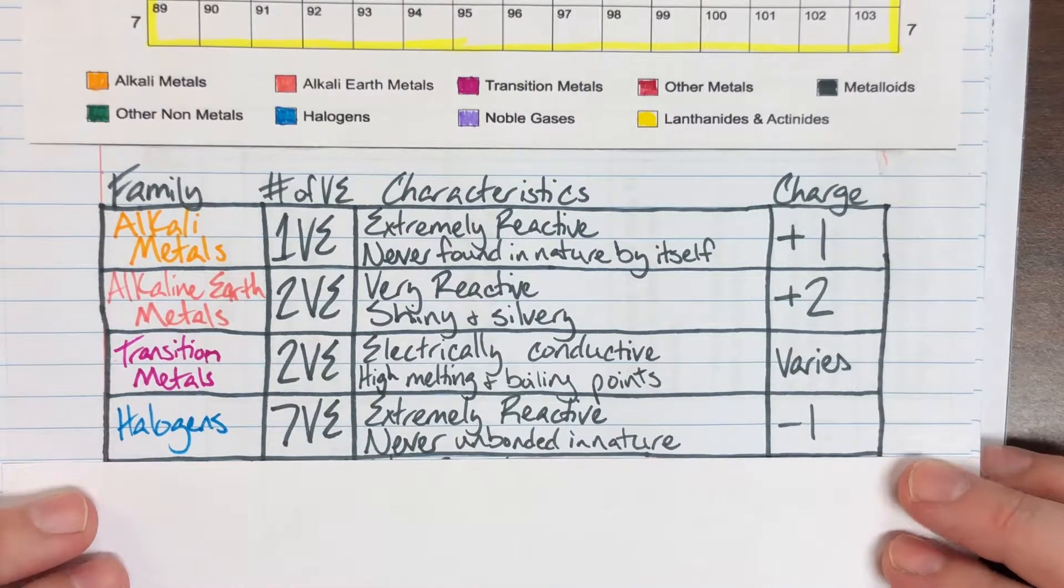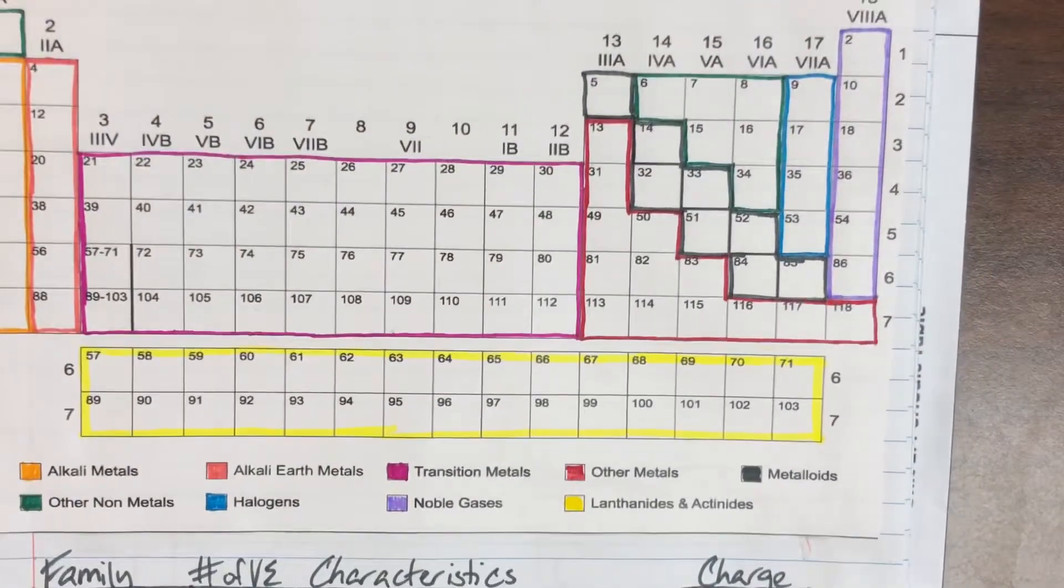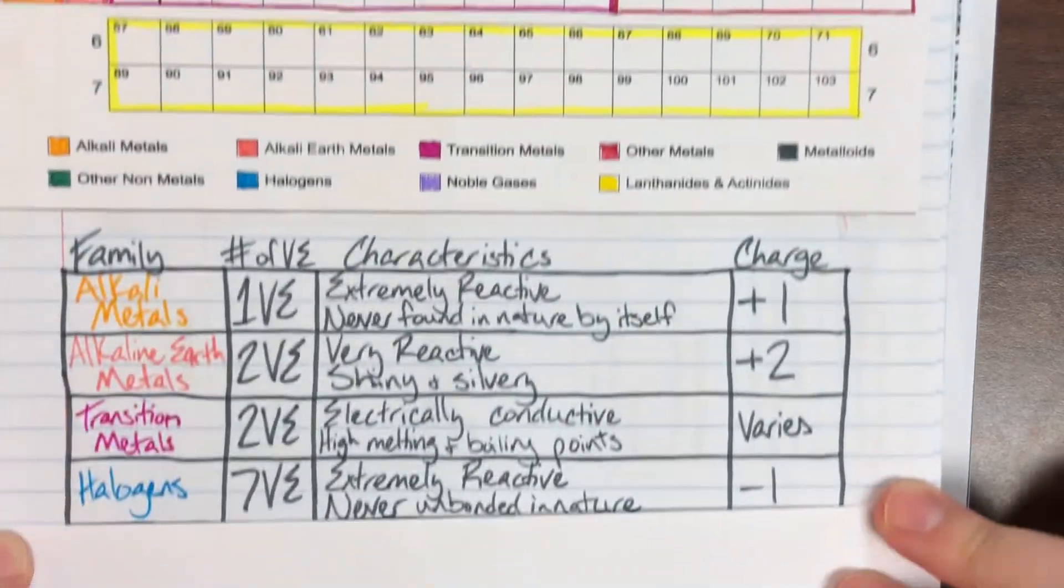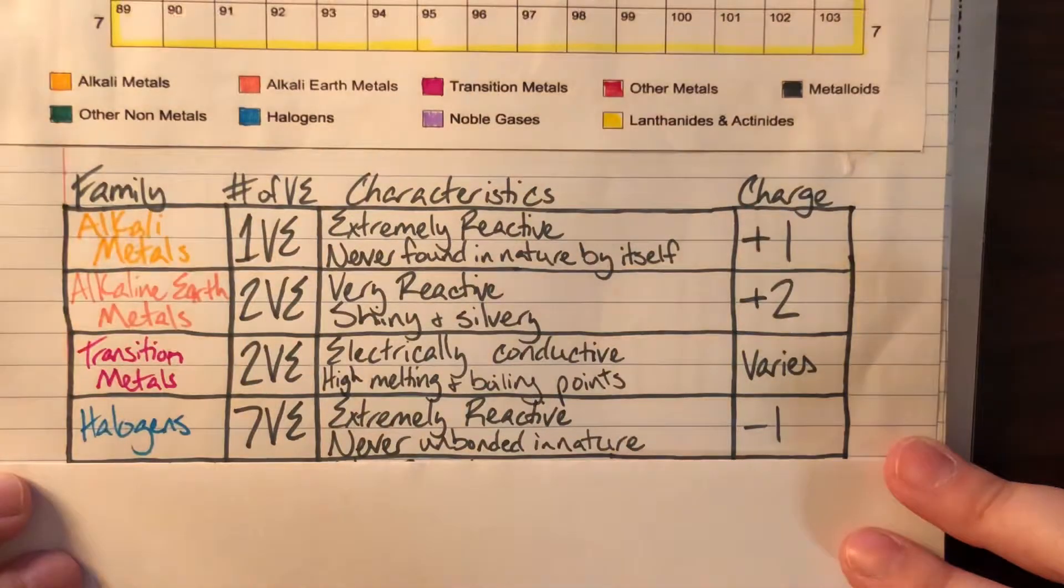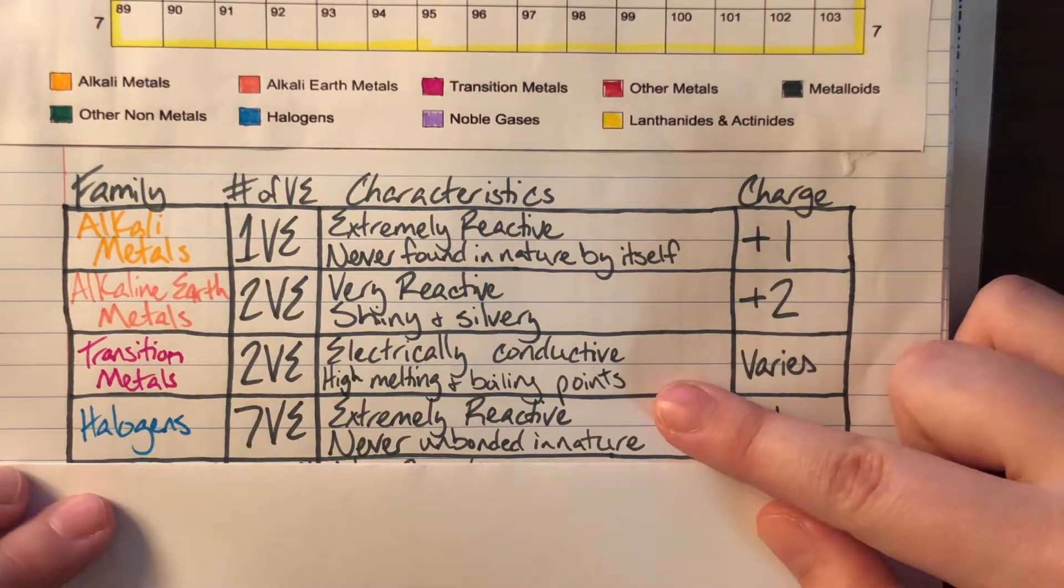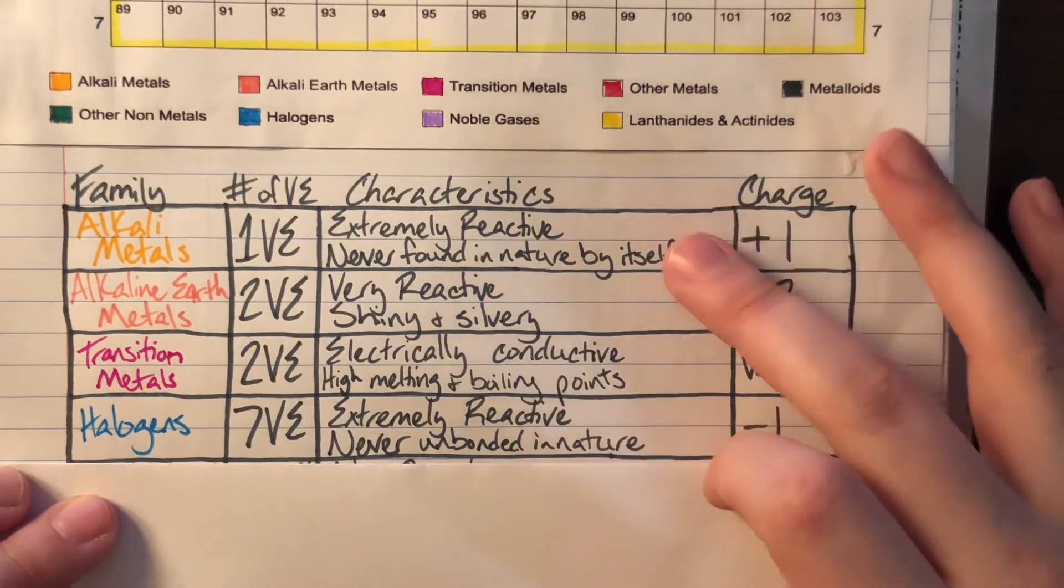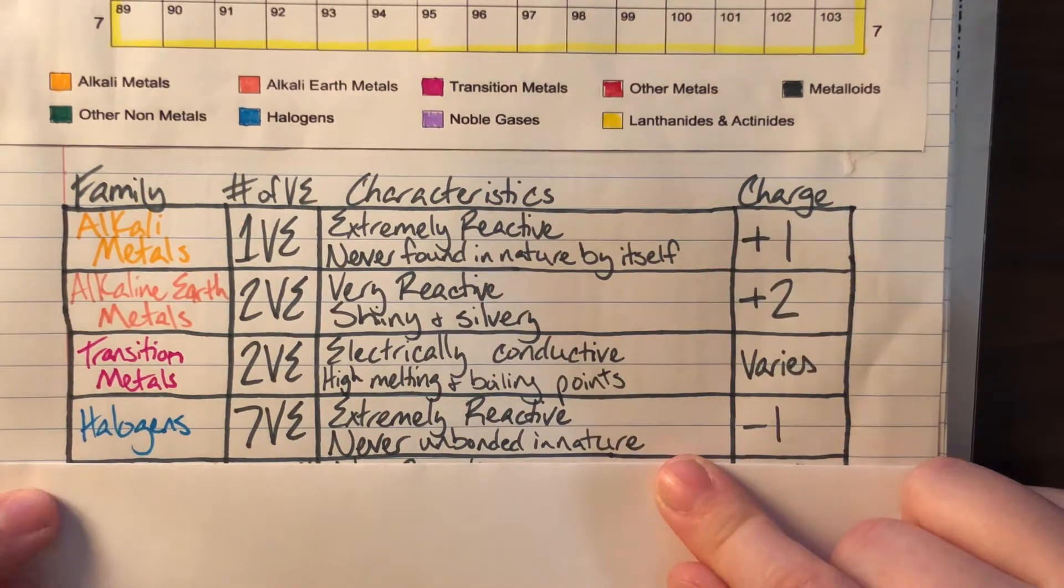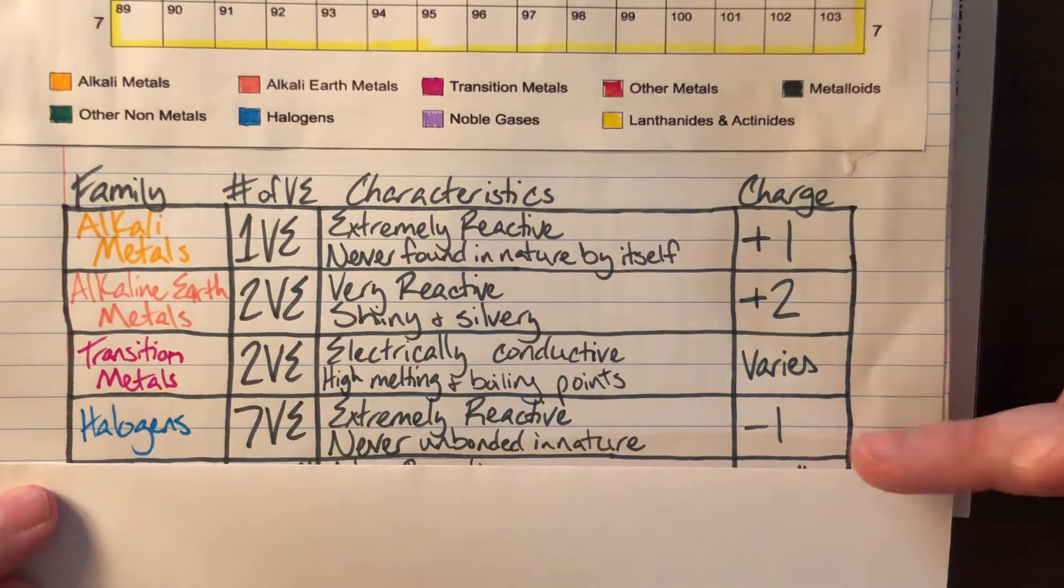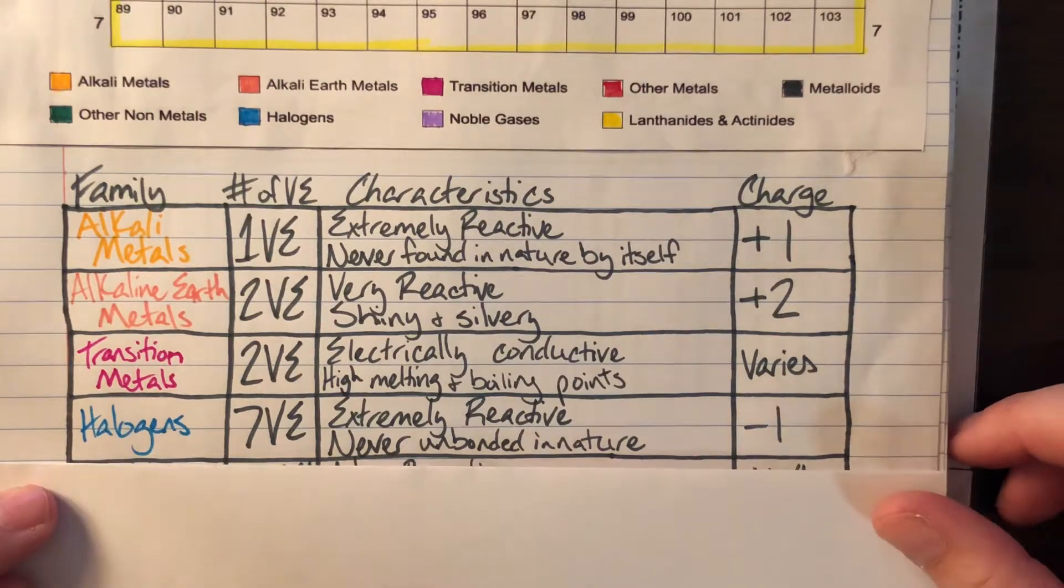Next, we have halogens, our first non-metals in column 7. They have 7 valence electrons. Halogens are extremely reactive, just like alkali metals, and are also never found unbonded in nature. They have the exact opposite charge of alkali metals because they have 7 valence electrons and want 8. They're 1 away, so they steal 1 to have 8 valence electrons, giving them a -1 charge.